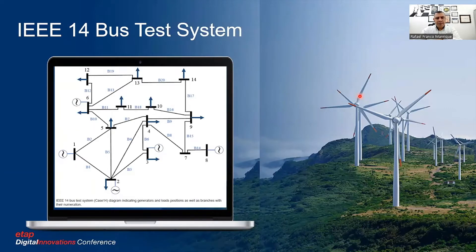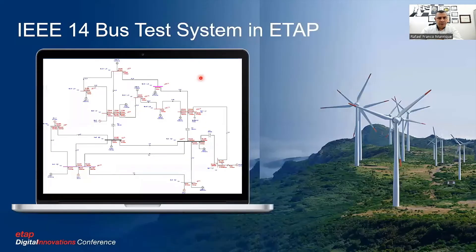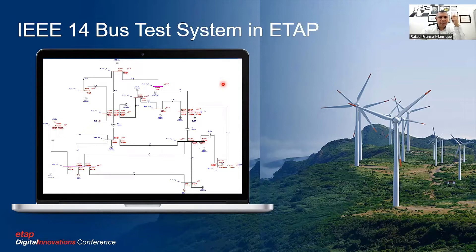The test system chosen for this work is the IEEE 14-bus system — a fully looped interconnected system — modeled in ETAP. ETAP has several power flow modules, including transient stability, voltage stability, protection and coordination, arc flash, short circuits, and load flow. However, it does not have the ability to determine PMU location for system observability. This is the key gap we are addressing.